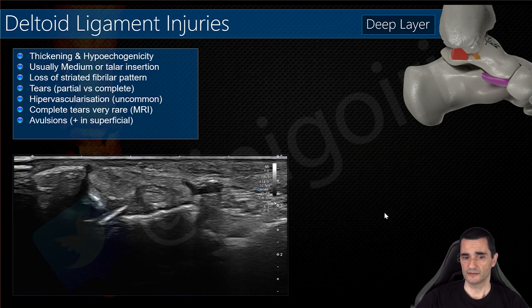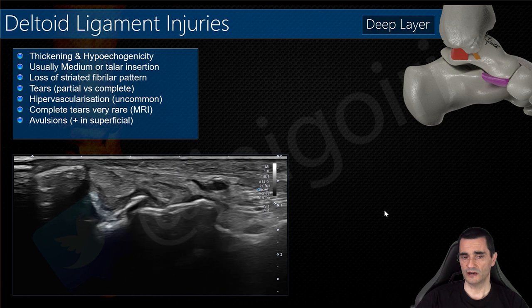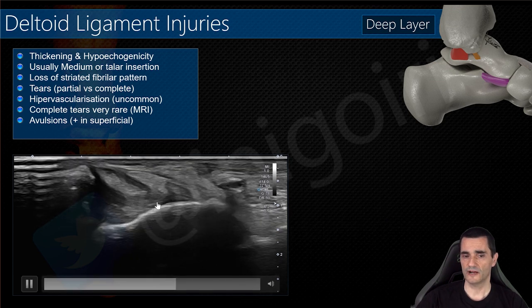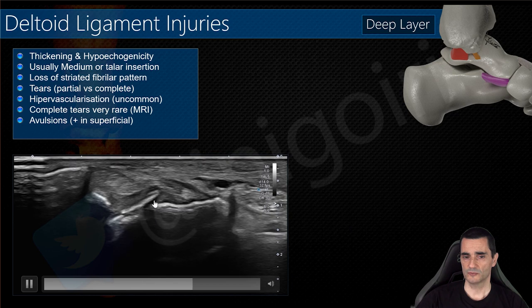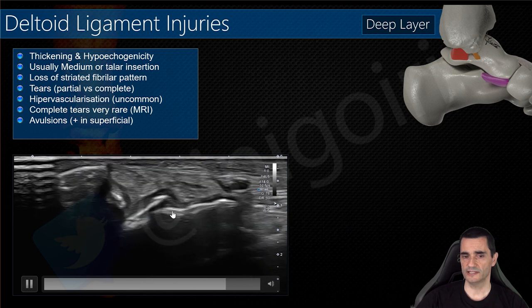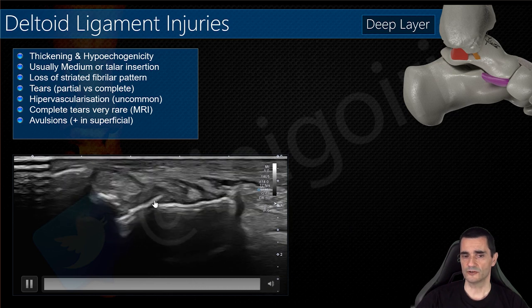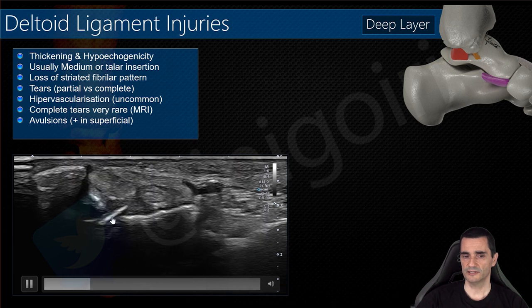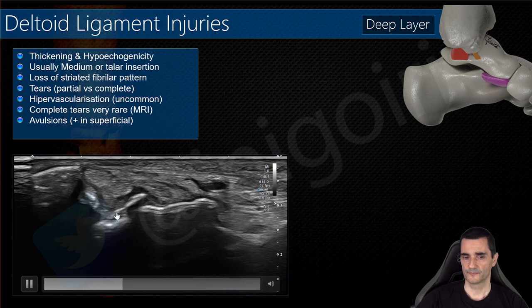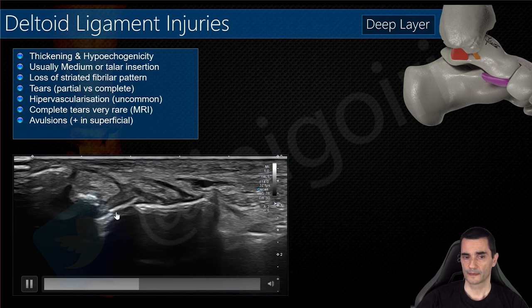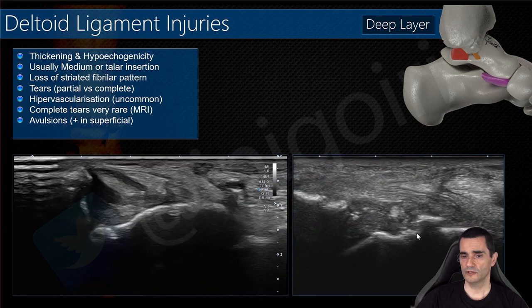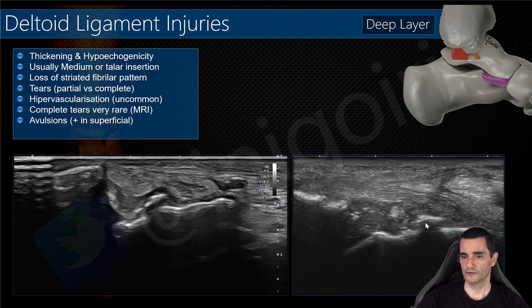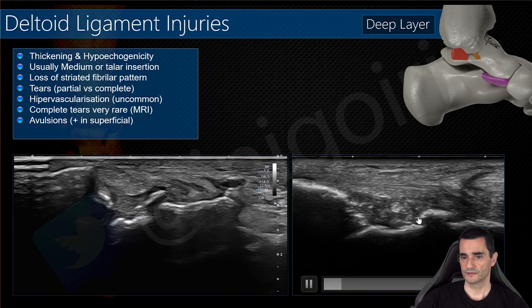Avulsions may be present. They are most frequent in the superficial component, but you can also find avulsions in the deep component. This is an avulsion of the insertion of the posterior tibiotalar ligament at the talus, and this is an avulsion of the anterior tibiotalar component at the talus.